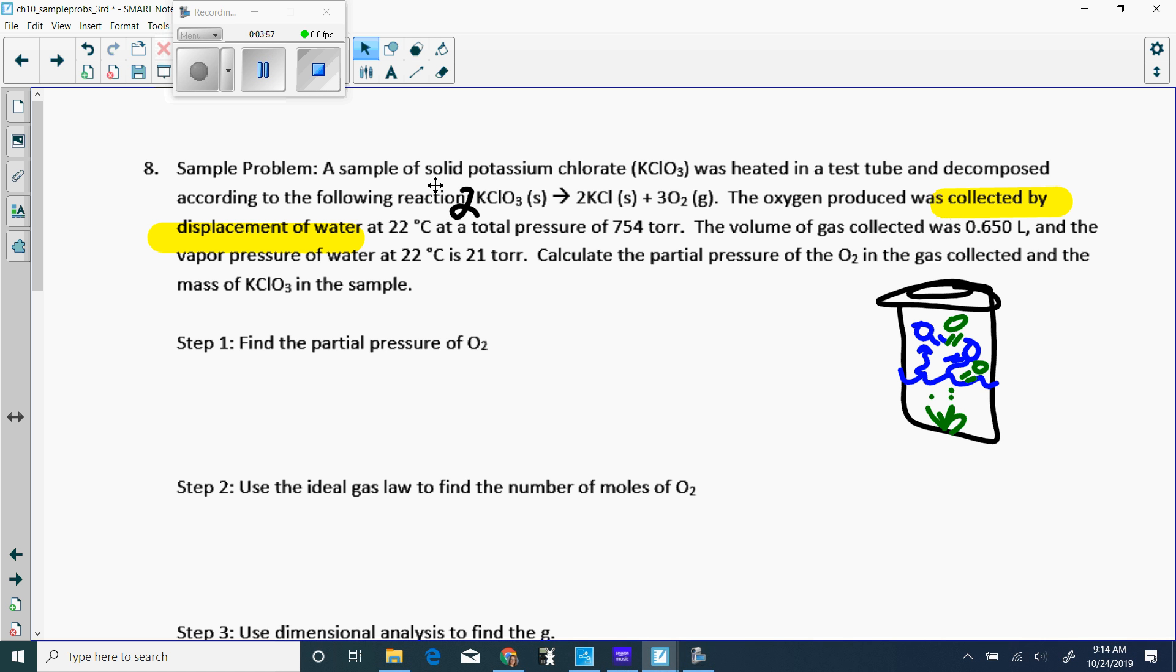At a total pressure of 754 torr. Remember yesterday we learned that sometimes they say this is atmospheric pressure. The volume was 0.65 and the vapor pressure of water, that means the pressure of just those blue guys bumping into the walls, is 21 torr. That's always going to be given to you. Calculate the partial pressure of oxygen and the mass of the potassium chlorate. The first thing we're always going to do is this equation here.